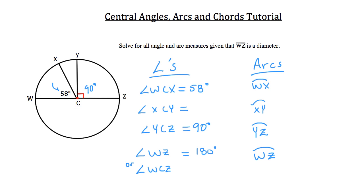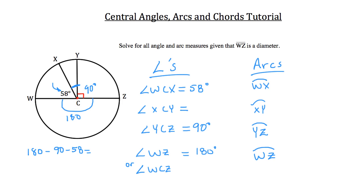...and you know that this whole length is 180 degrees, that must mean that this top angle right here is also 180 degrees. So what we want to do is take that 180 degrees that we know that whole top angle is, subtract the 90 that we know about, and subtract the 58 that we know about. And what's remaining is going to be this angle right here, which is what we're solving for. When you do that subtraction work, you get 32 for an answer.